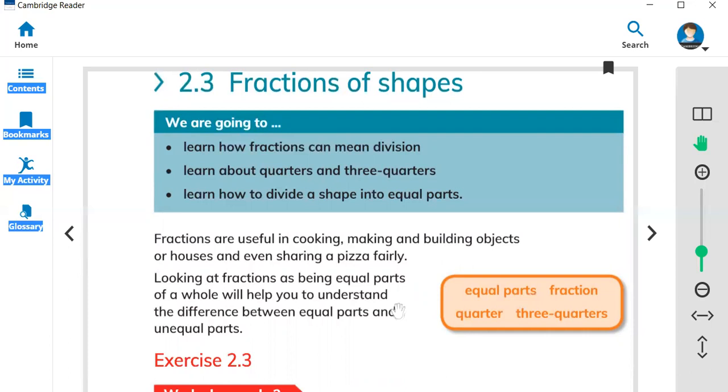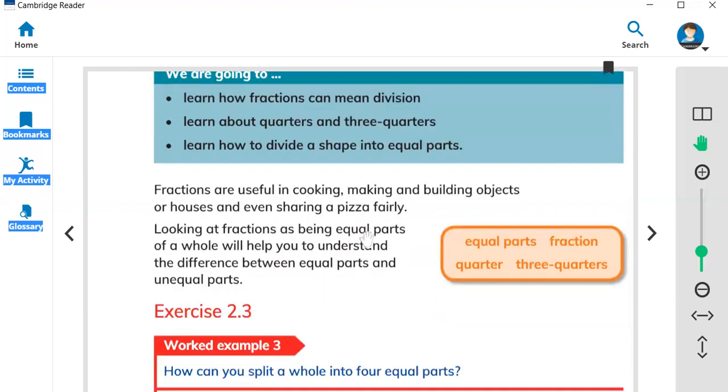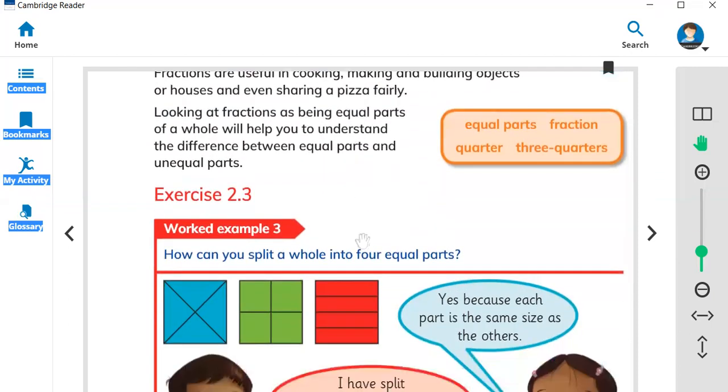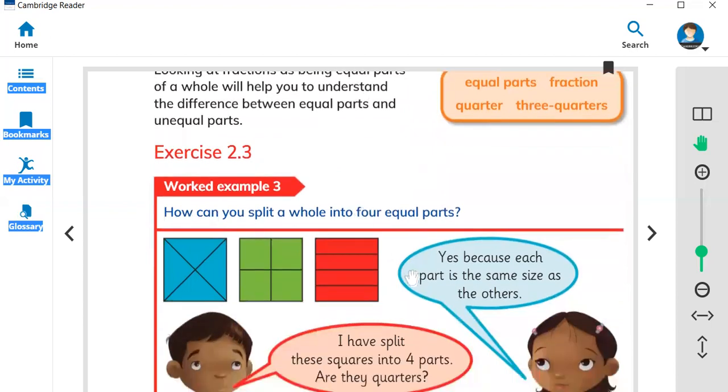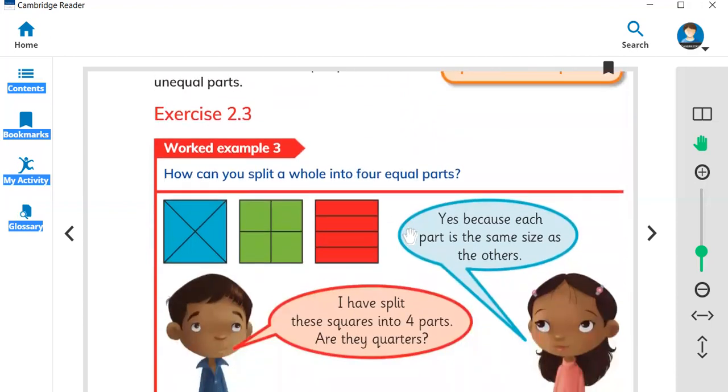What can fraction be used for? Fraction can be used while a pizza can be shared equally to different boys, or making buildings. So fraction is very useful to make houses, buildings, cooking. Fairly means all the shapes divide into equal parts.